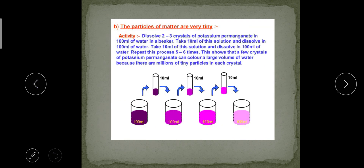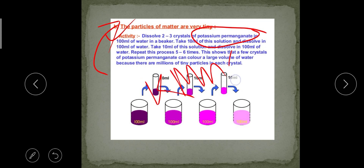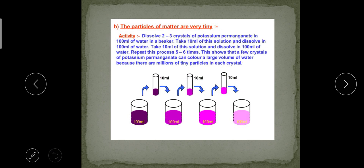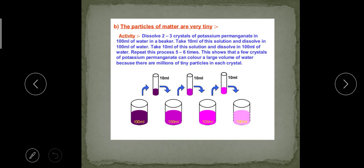The particles of matter are very tiny. We can explain this with another experiment. Suppose you take some amount of potassium permanganate (KMnO₄) crystals and dissolve them in 100 ml of water, giving you a potassium permanganate solution. From that solution you take 10 ml and add it to another beaker containing 100 ml of water.